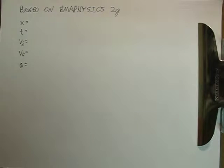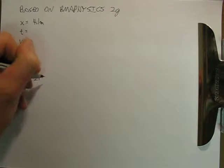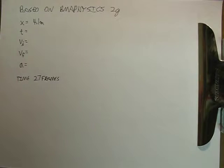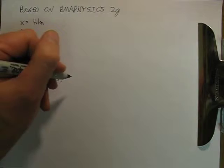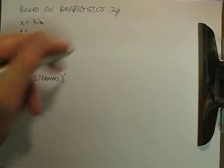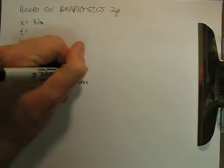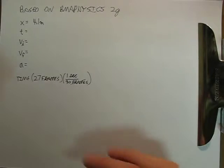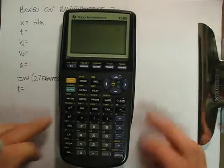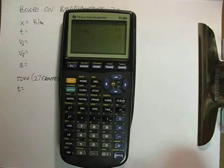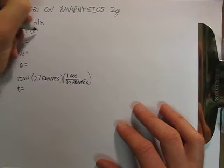Now, I measured that the distance from the ball drop to the deck was about 4.1 meters. And I measured that the time, using the step-by-step, I measured on the video that the time was 27 frames. I know that my camera shoots at 30 frames per second. So if I want to convert that into seconds, I'm going to put 1 second up on top and 30 frames on the bottom. Frames are going to cancel, and so I'm going to end up with my time is going to be 27 divided by 30, which is 0.9 seconds.